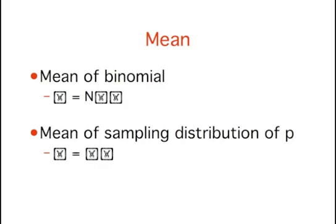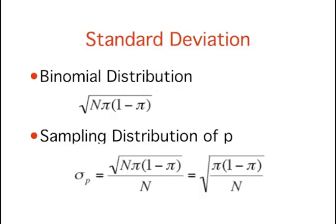The binomial distribution has a mean of n times π, where n is the number of trials, and π is the probability of success on a given trial. For the sampling distribution of p, we divide by n to adjust for the fact that we are now dealing with means instead of totals. The mean is π. The standard deviation of the sampling distribution of p is the standard deviation of the binomial distribution divided by n.